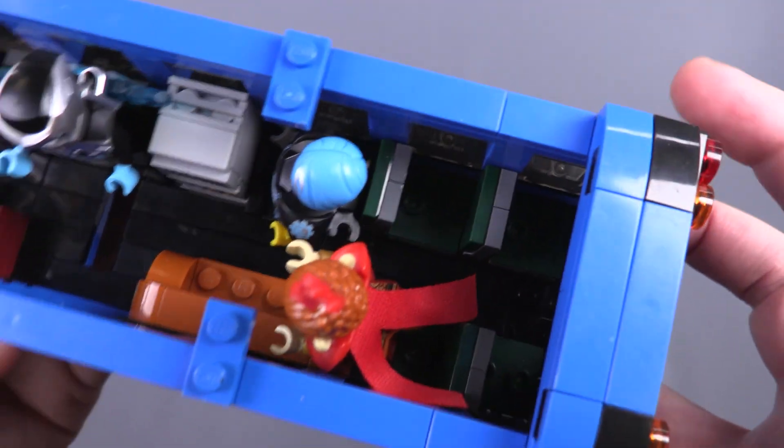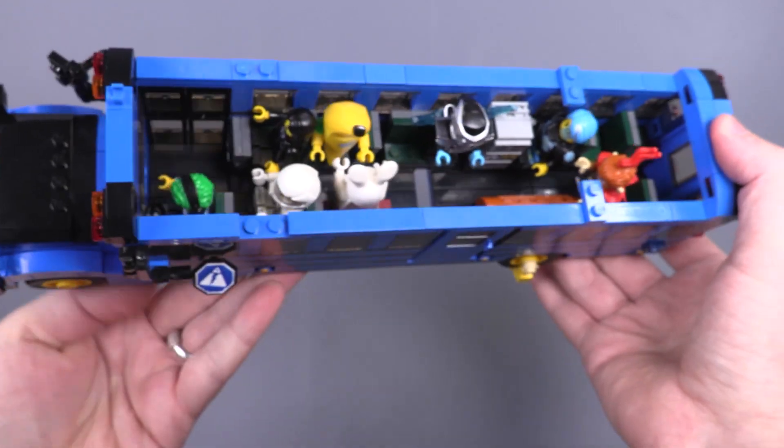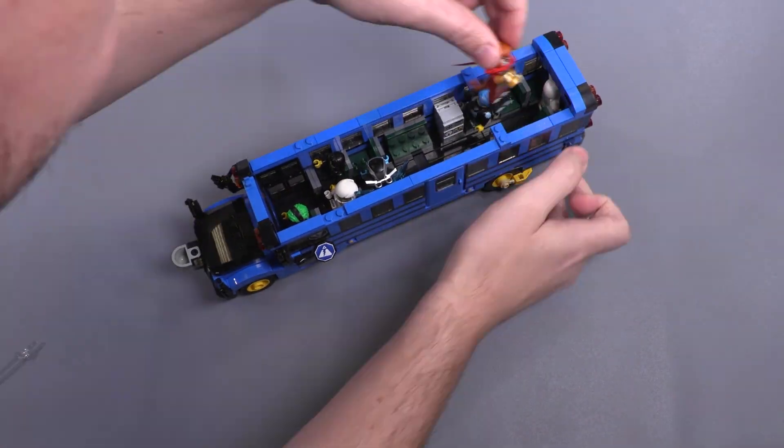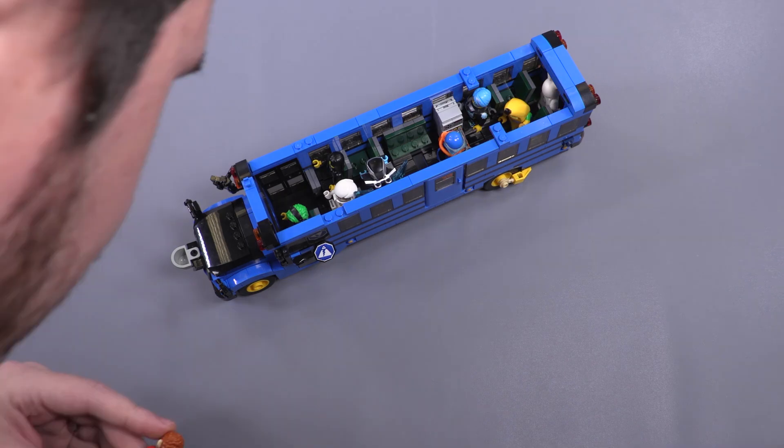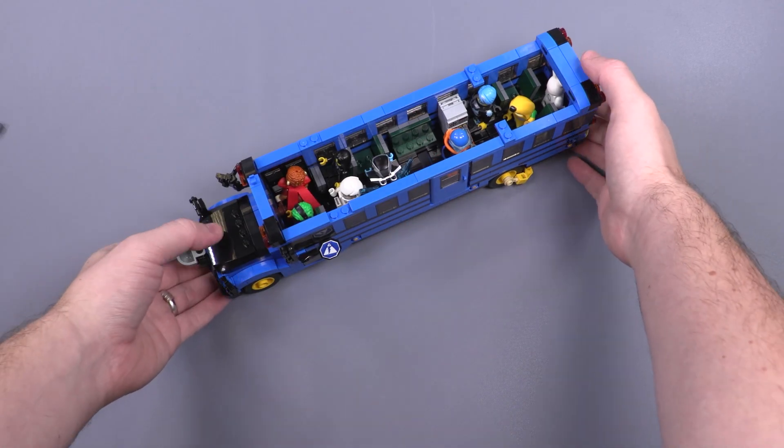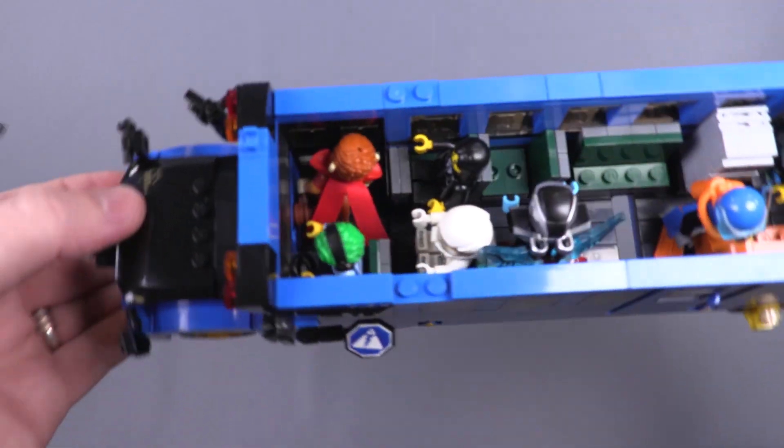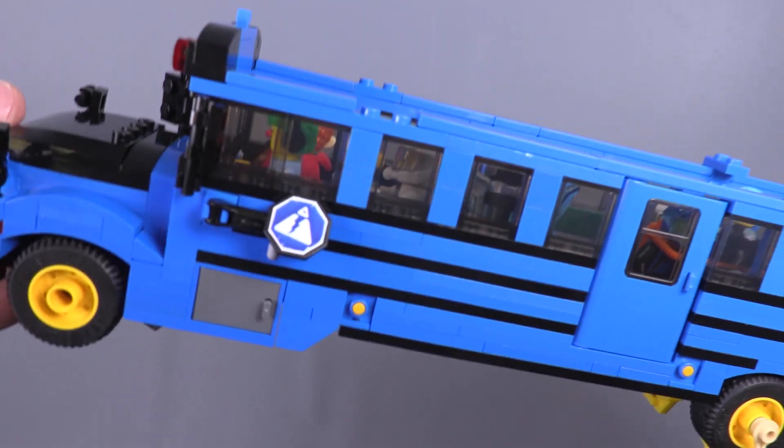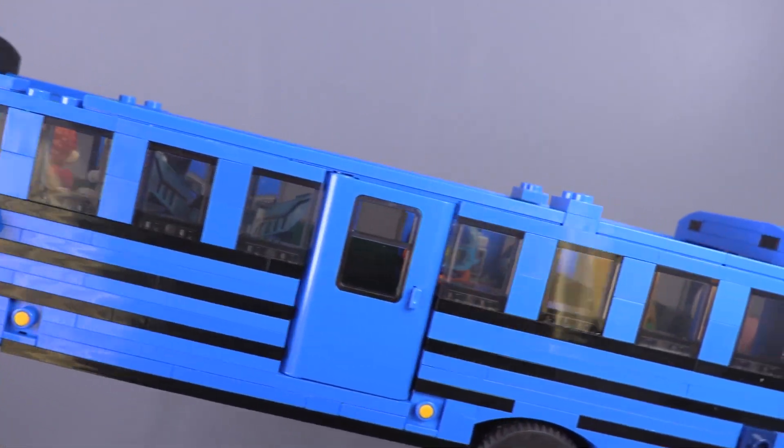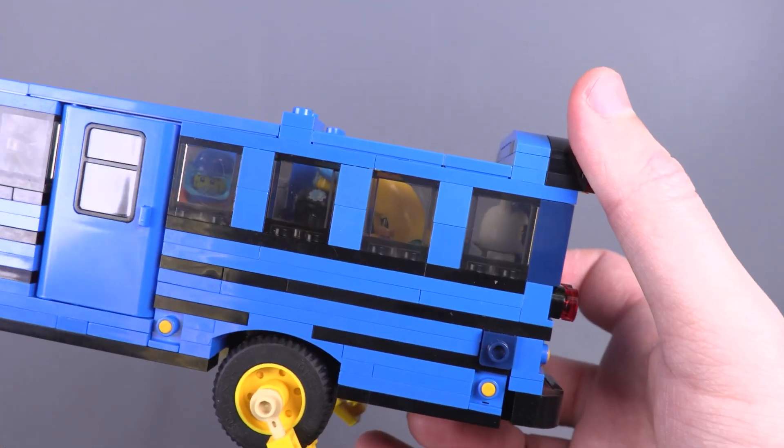There's an endless amount of characters or skins that you could add to be minifigures for the Fortnite battle bus, but these were just the ones we had lying around here that I thought would work pretty well. Real quick, let me rearrange these characters. Some of the tops of the heads were sticking out—I don't think the roof would have been able to go back on properly. It's better to have some of their faces facing the window.